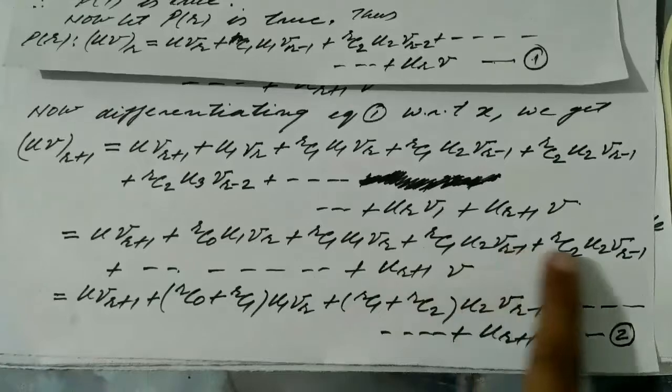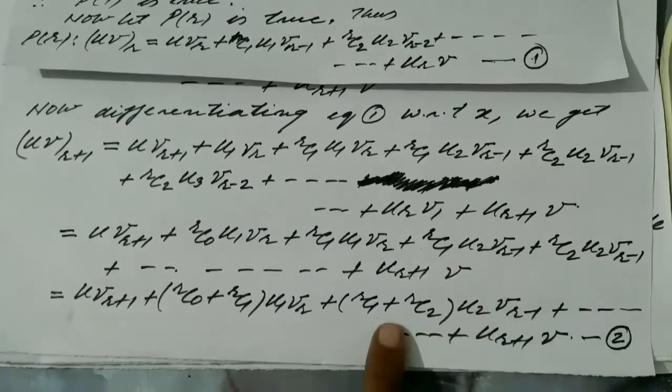In the next step, the first term u·v_{r+1} is written as it is. In the next two terms we take u1·v_r common, giving u1·v_r·(rC0 + rC1). In the following two terms we take u2·v_{r-1} common, giving u2·v_{r-1}·(rC1 + rC2), and so on to the last term u_{r+1}·v.